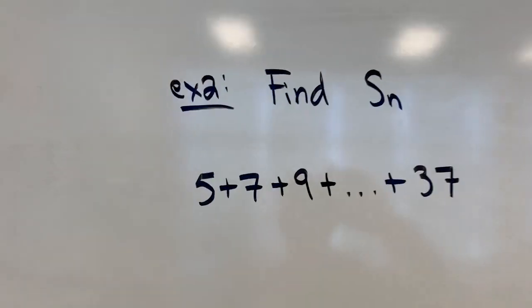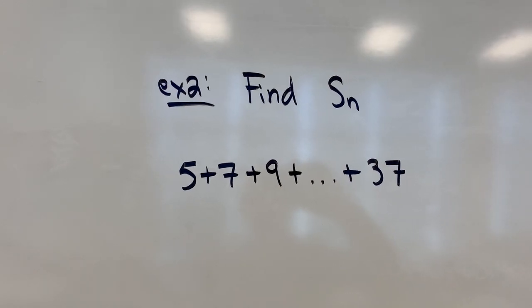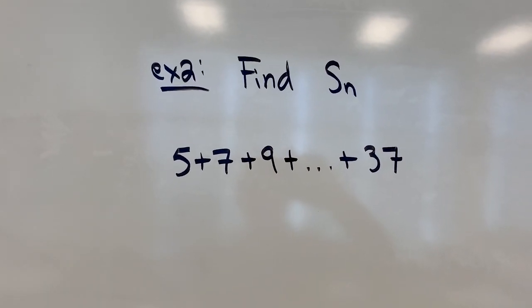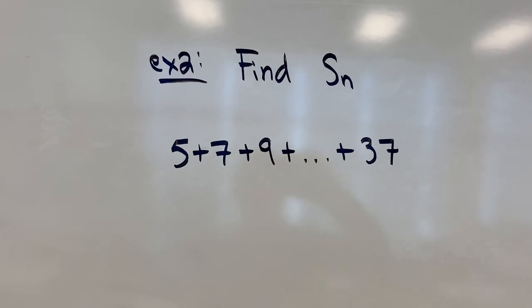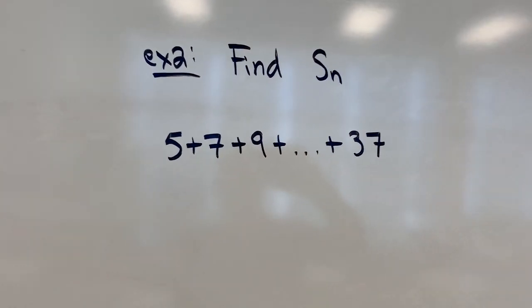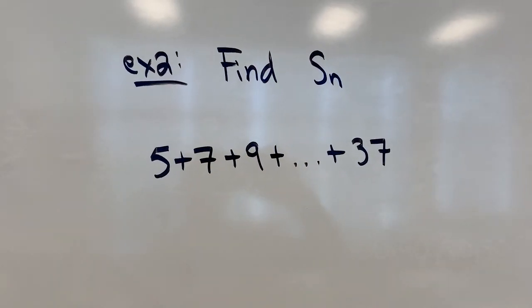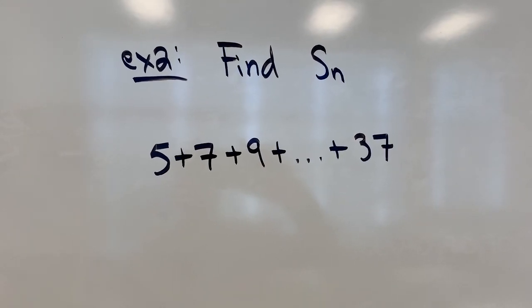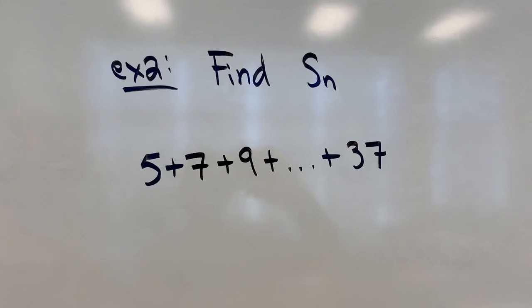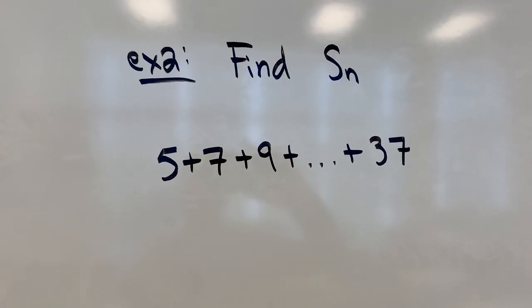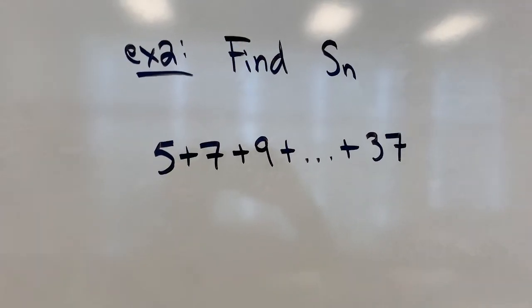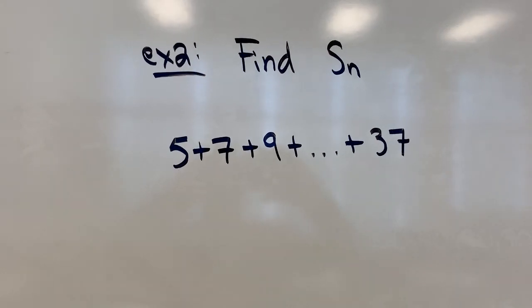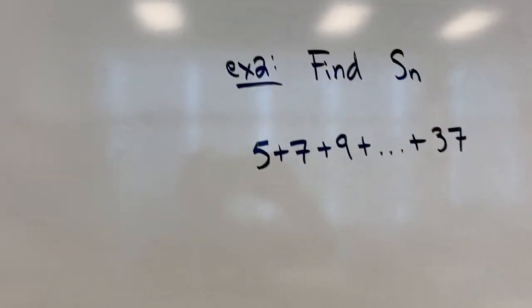Now the second example I want to show you is finding the sum of this arithmetic series. This time I don't actually know how many terms there are—that's a bit of a disadvantage—but I do know what the last term I'm adding is. I'm adding all these terms up until I get up to the number 37. So first thing I have to do is figure out how many terms there are, because no matter which of the two sum formulas I want to use, there's an n in there.